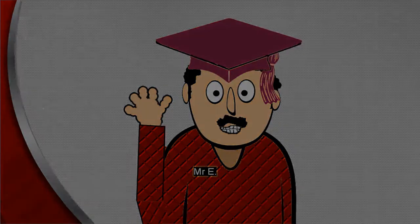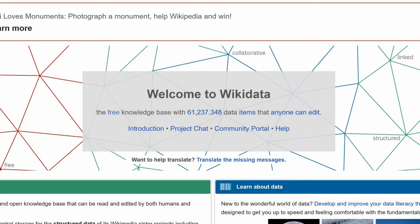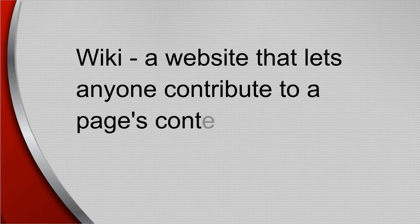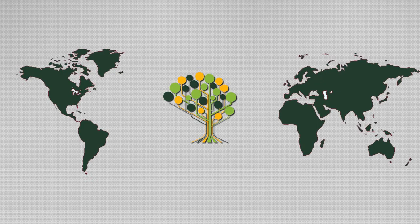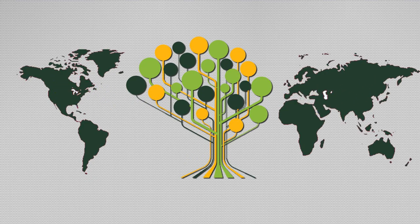He started with the basics. There's WikiTree, Wikipedia, Wikidata. Just what does Wiki mean? It's a website that lets anyone contribute to a page's content. In WikiTree, that means adding profiles and editing them with dates, names, etc. Since WikiTree is global, over the years it's gotten bigger and bigger. With millions of profiles, that's too many bits of data to count, and it's a huge opportunity to get information wrong.